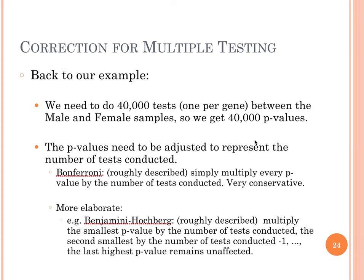A more elaborate approach is the Benjamini-Hochberg method. Roughly, the smallest p-value — the most significant — is multiplied by the total number of tests performed. The second smallest p-value is multiplied by the number of tests minus 1, the third by the number of tests minus 2, and so on. In other words, the most significant p-value receives the most correction, whereas the least significant p-value receives the least correction.